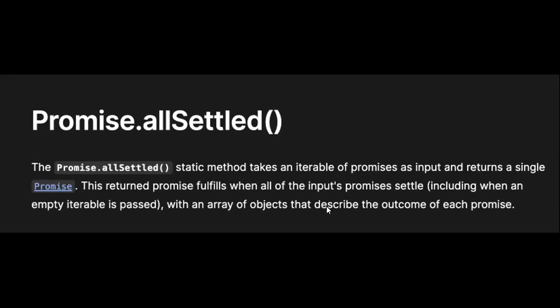Promise.allSettled, similar to Promise.all, takes a list of promises as input and then resolves when all the promises are fulfilled. The return value holds at each index the response of each particular promise, similar to Promise.all - it takes a list of promises and returns a list of their responses.